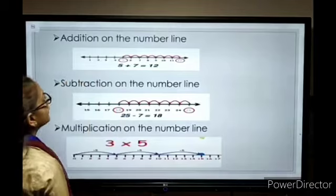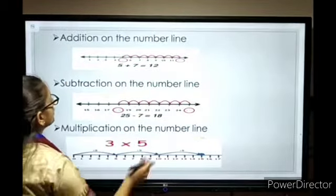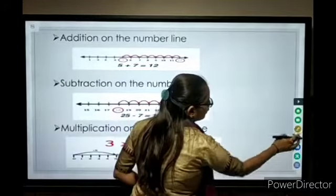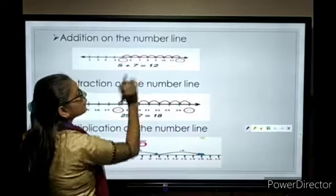Addition on the number line. On the number line, we have to add. Addition: 5 plus 7 equals 12.